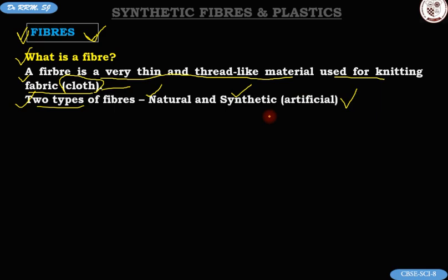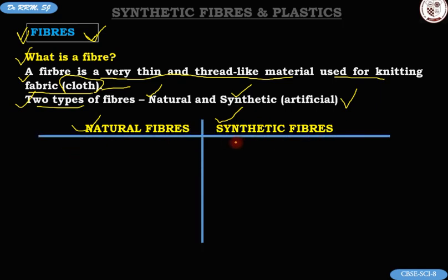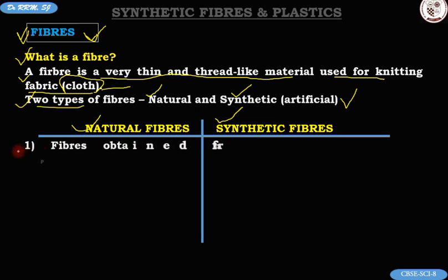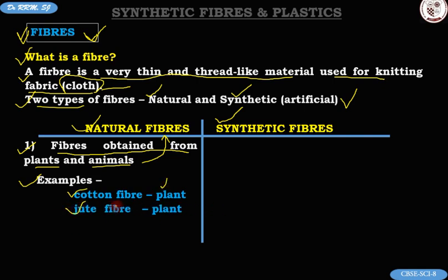Let me draw a small table to differentiate natural and synthetic fibers. Natural fibers are the fibers which are obtained from plants and animals. We have some beautiful examples: cotton fiber — obtained from plants; jute fiber — also obtained from plants; wool fiber — obtained from animals; silk fiber — also obtained from animals.